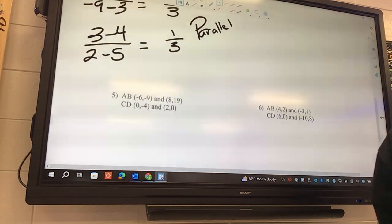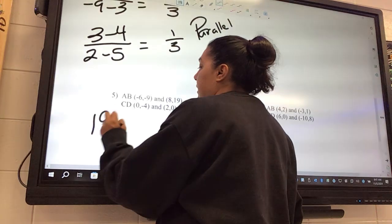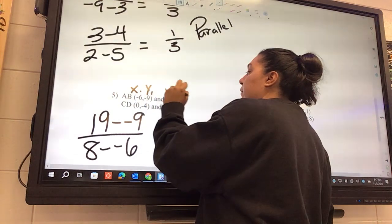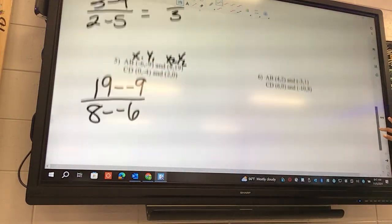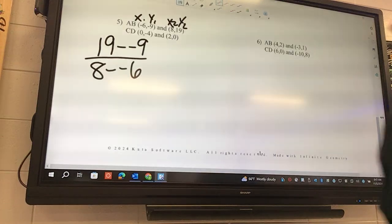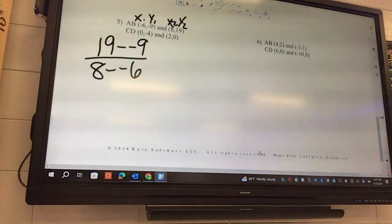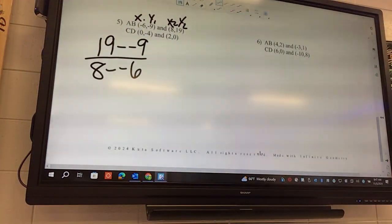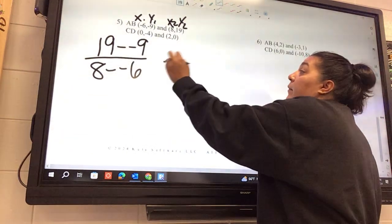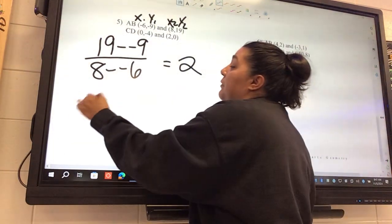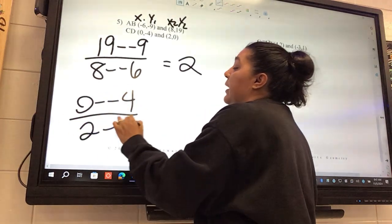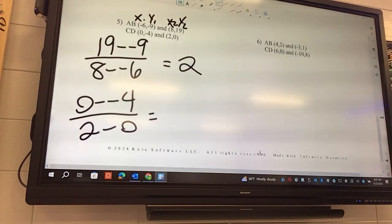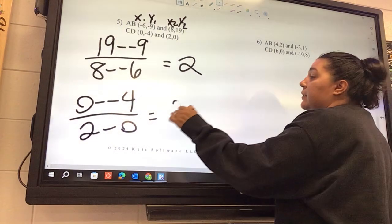Number 5 is going to be 19 minus negative 9 over 8 minus negative 6. 2. Somebody agree? Yeah. Okay, and we got 0 minus negative 4 over 2 minus 0. 2. 2. Okay, so what kind are these? They're parallel.